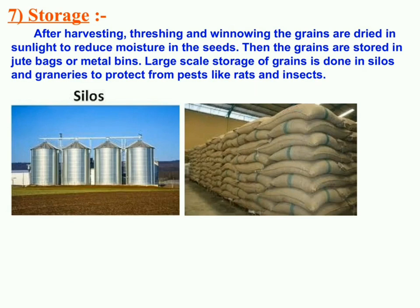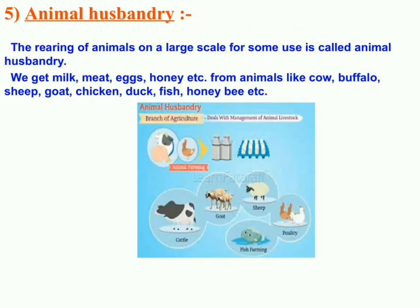The next important topic is animal husbandry — the management and care of farm animals for milk, eggs, or meat. Animals are mainly categorized into two groups: milk-yielding animals like cows and buffaloes, and egg and meat-yielding animals like fish and sheep. This concludes the chapter on crop production and management. Stay at home and stay safe. Thank you.